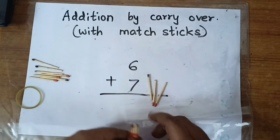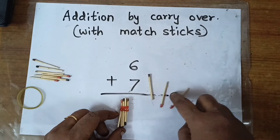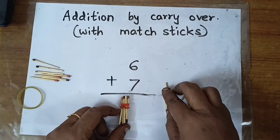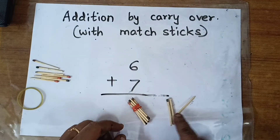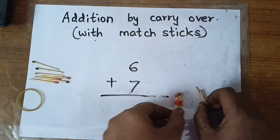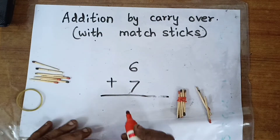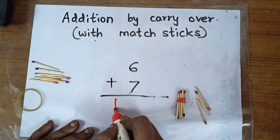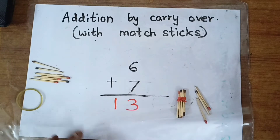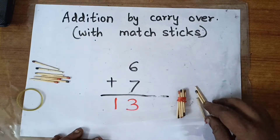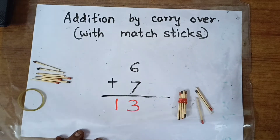Plus, how many are left? 1, 2, 3. So my answer is 1 ten 3 units. Let us write here: 1 ten 3 units. This is addition by carryover.